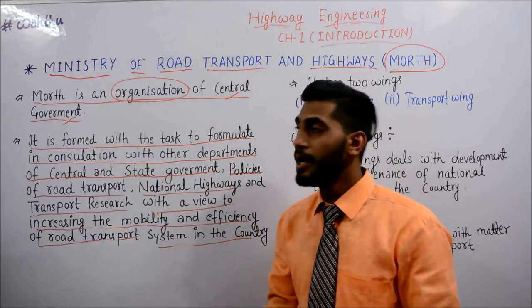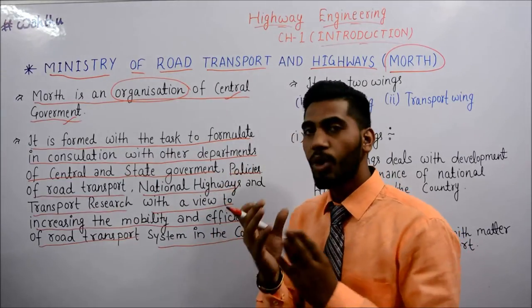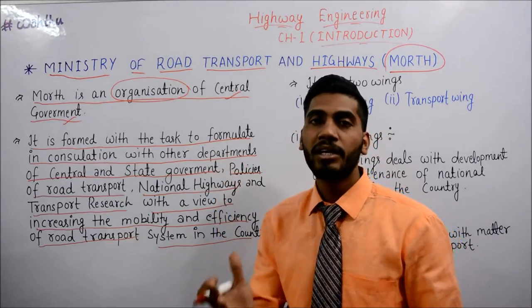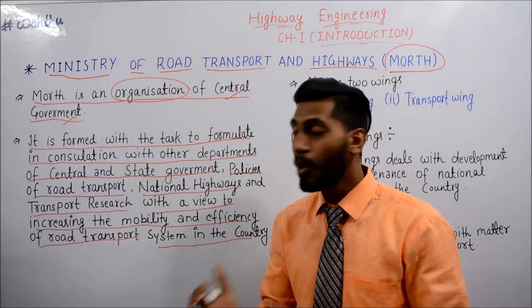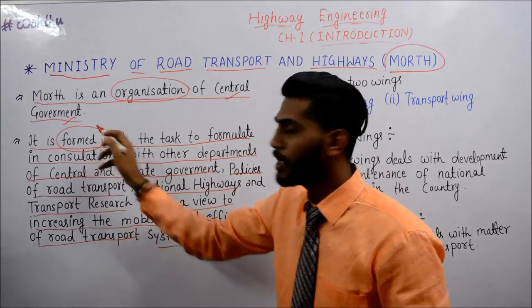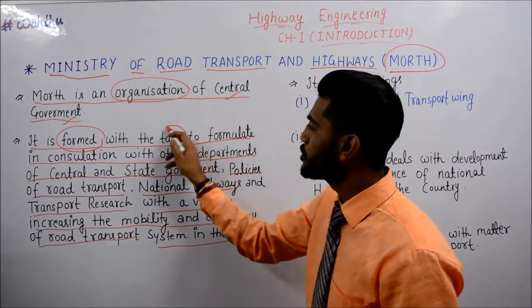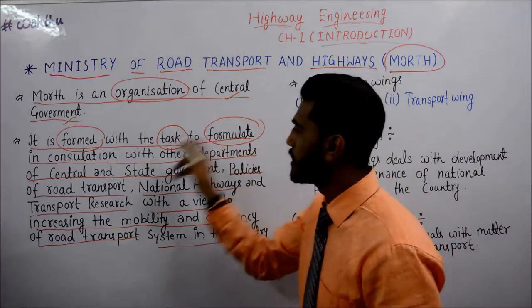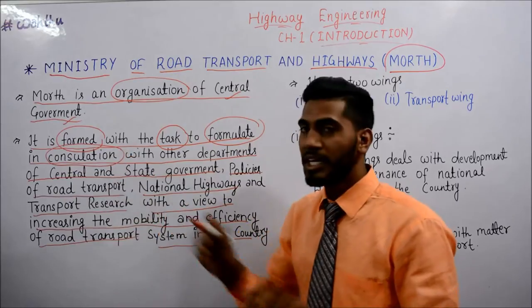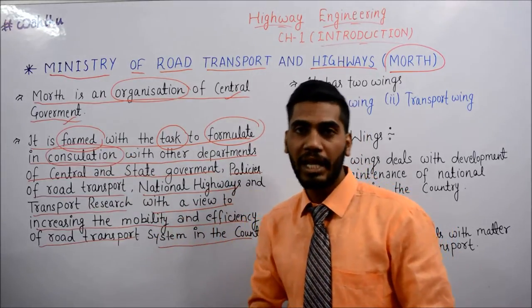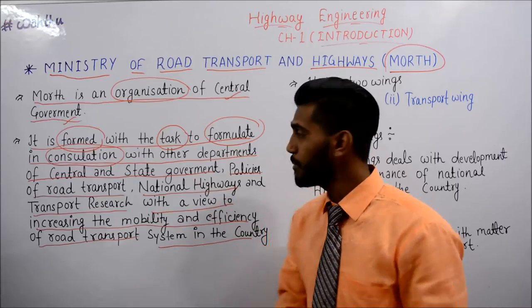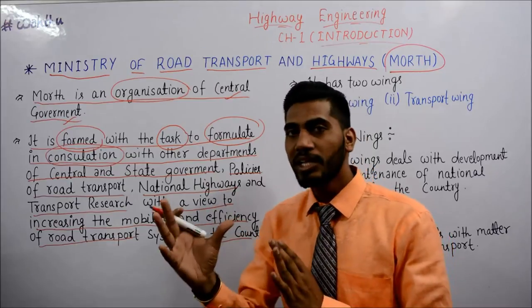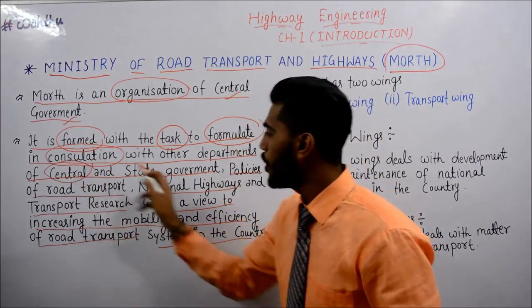तो इसका मतलब हुआ कि MORTH एक organization है Central Government की. यह formed हुआ with the task — कुछ कार्य करने के लिए — to formulate, in consultation with other departments of central and state government. यह Central Government और State Government दोनों के साथ कार्य करती है.